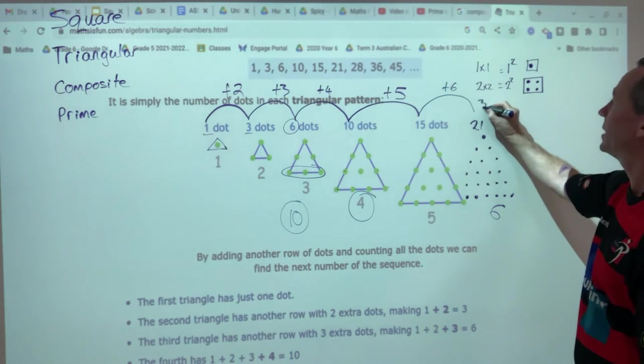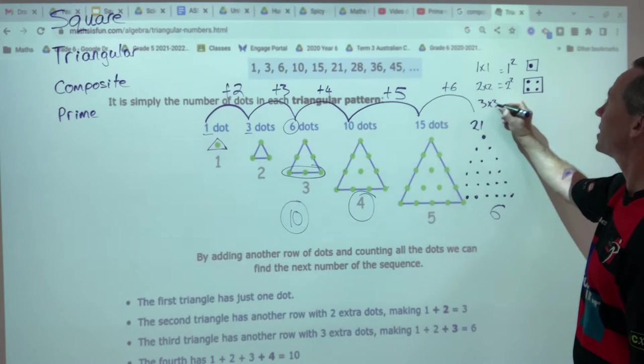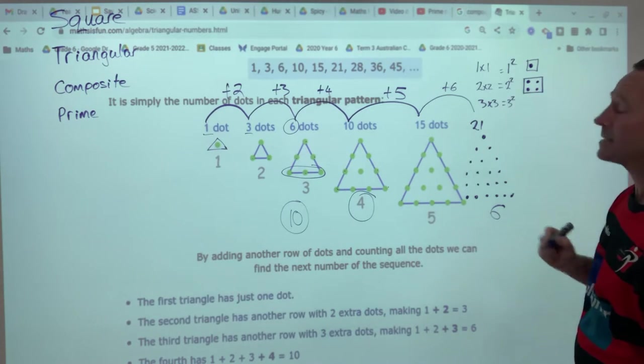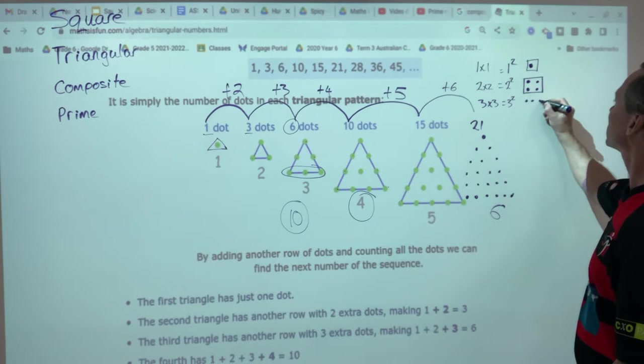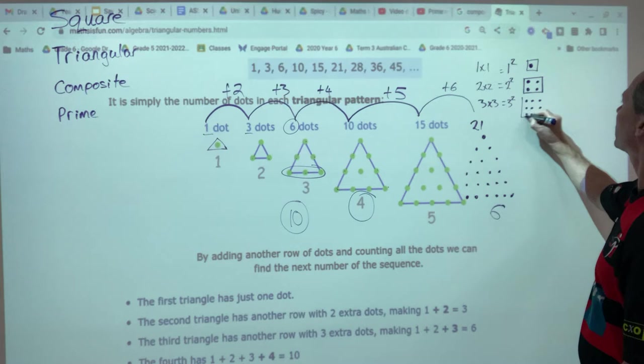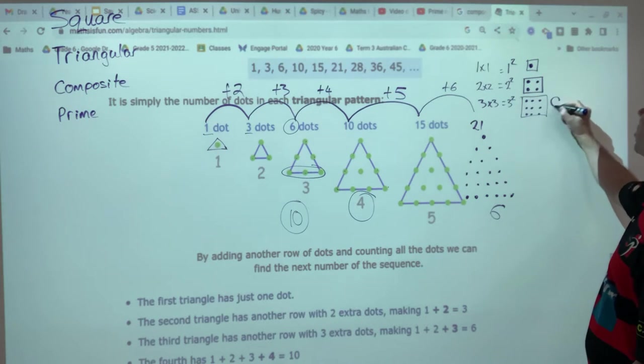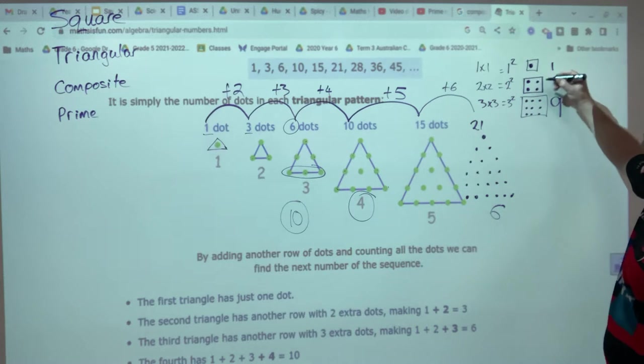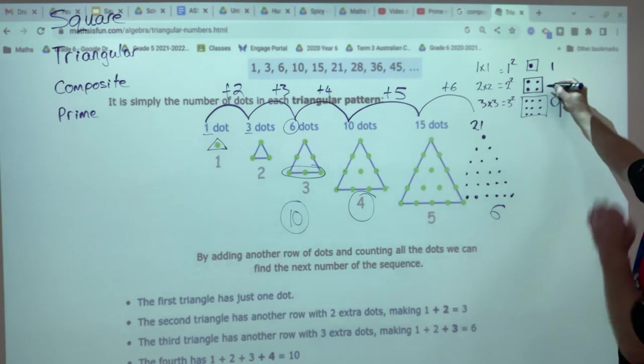Next one, three times itself, three times three, you could write it like this. So you have three dots by three dots. And that gives me nine. First square number is one. Second square number is one, two, three, four.